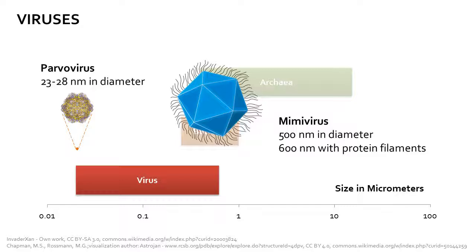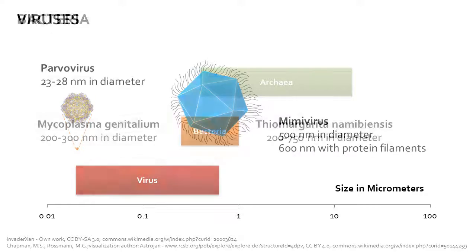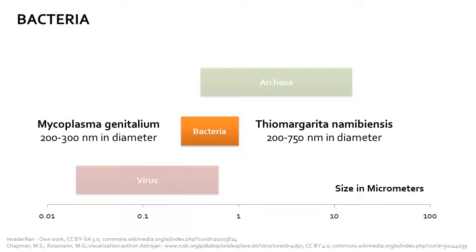This means that the largest virus is approximately 25 times the size of the smallest virus known to date. Bacteria exhibit more homology in size, ranging from 200 to approximately 750 nanometers in diameter.